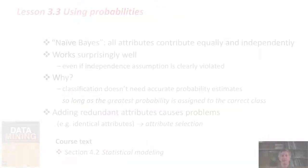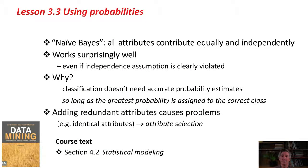That's the Naive Bayes method. The assumption is that all attributes contribute equally and independently to the outcome. It works surprisingly well, even in situations where the independent assumption is clearly violated. Why does it work so well when the assumption is wrong? That's a good question. Basically, classification doesn't need accurate probability estimates. We're just going to choose as the class the outcome with the largest probability. As long as the greatest probability is assigned to the correct class, it doesn't matter if the probability estimates are all that accurate.